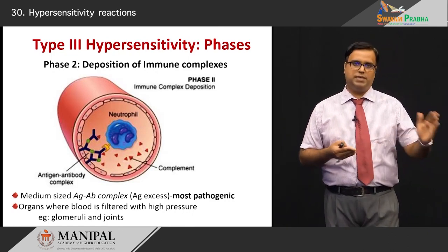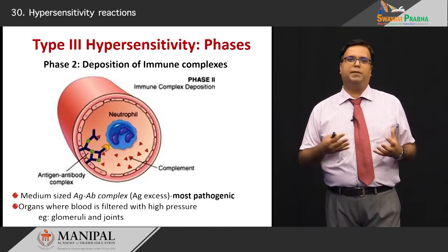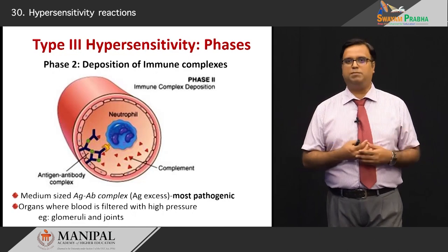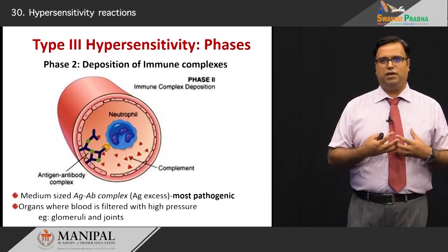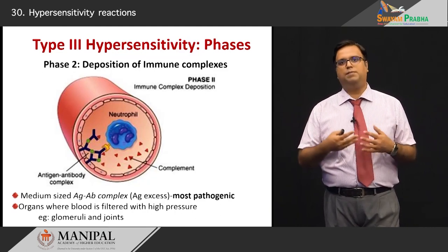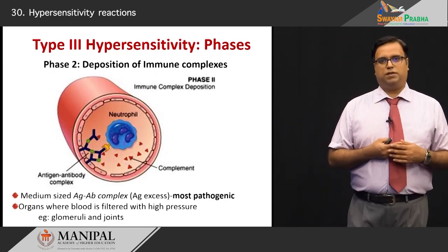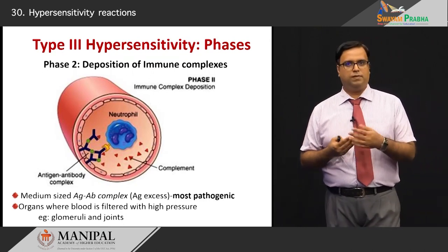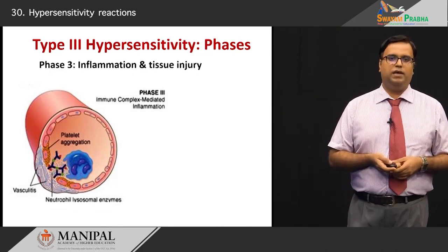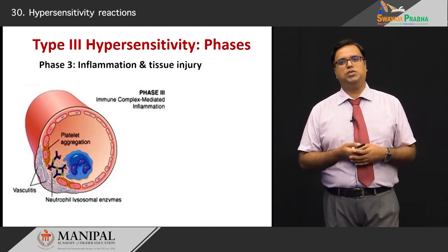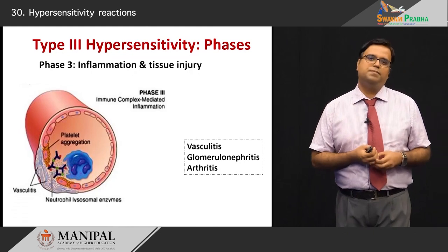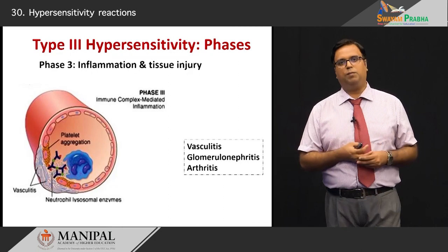Type 3 hypersensitivity preferentially affects organs which filter blood at very high pressure — areas where immune complexes easily deposit. The kidneys with their intricate glomerular structure and the synovium of joints are prime sites. Phase 3 is inflammation and tissue injury: immune complexes on the surface recruit inflammatory cells which release proteases and other enzymes, bringing in vasculitis or tubulitis in the region where immune complexes have deposited. Clinical manifestation occurs 10 to 15 days after antigen administration, with a triad of fever, joint pains, and urticarial rashes.